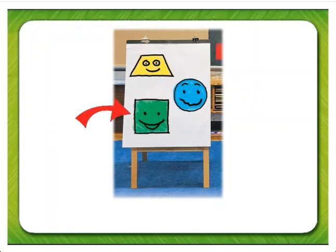What is the name of the green shape on the bottom of Ella's easel? That's right. It's a square.